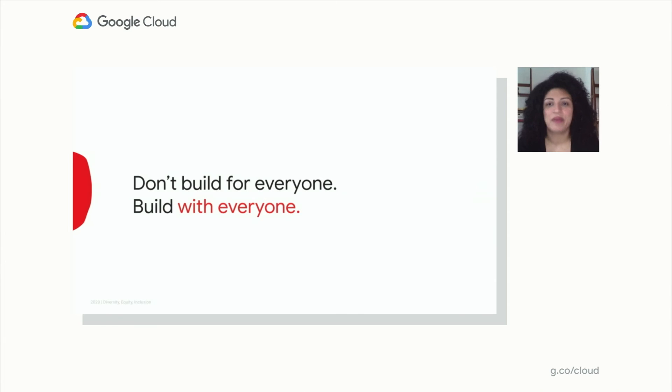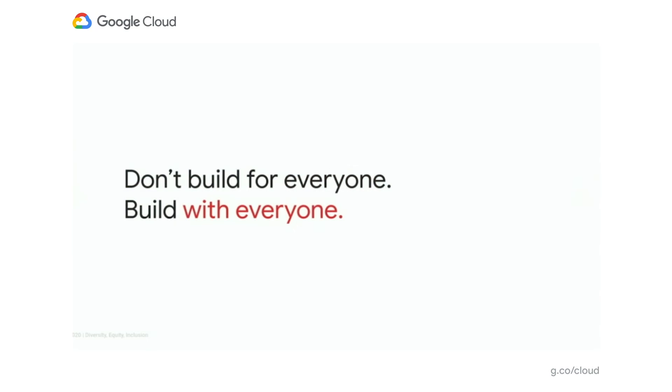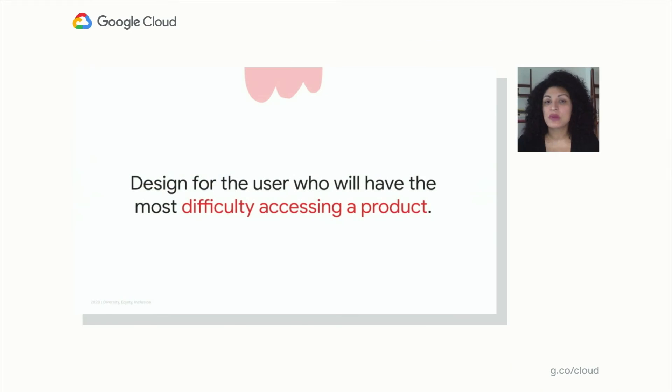The work cannot happen in a vacuum. It certainly will not happen when the technology sector as a whole is still failing at representation in hiring and in retention. That said, we're not going to pack up and go home. So how do we build for everyone? We build with our users. We need to engage our users across the spectrum of humanity — engage the users that are least like us and be intentional about centralizing them first, not as an afterthought. We also want to design for the user that has the most difficulty accessing the product. Building for those who have additional challenges will make our product better for everyone.